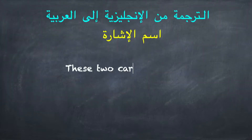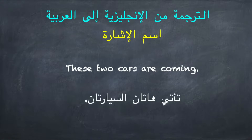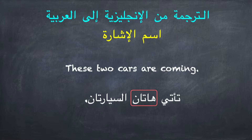'These two cars are coming'. نبدأ بالفعل ونكتب: تأتي هاتان السيارتان. لاحظوا أن اسم الإشارة هنا مؤنث ومثنى، لأن كلمة 'السيارتان' مؤنث ومثنى.